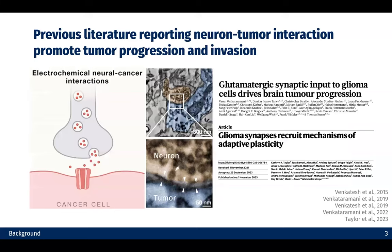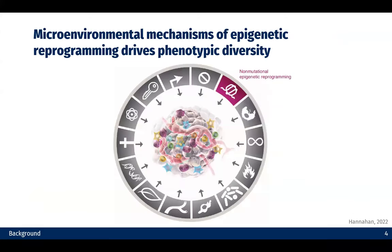All of those interactions can potentially contribute to GBM progression. There has been a very interesting story in the field — previous literature reporting neuron-tumor interaction. Basically, the tumor cells are growing synapses with the neuron and integrating into the neuronal circuits.